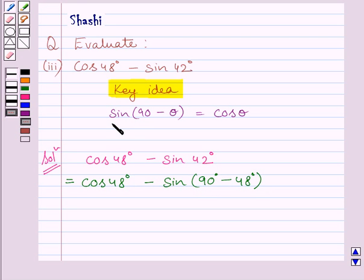Now from key idea we know sin 90 minus theta is equal to cos theta. Here value of theta is 48 degrees. So sin 90 minus 48 degrees can be written as cos 48 degrees. So this is further equal to cos 48 degrees minus cos 48 degrees.